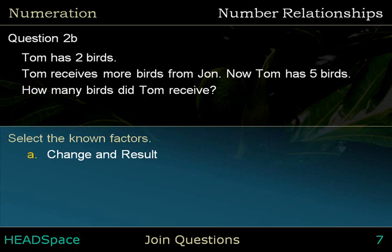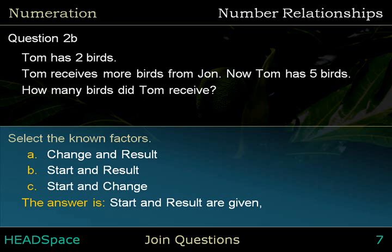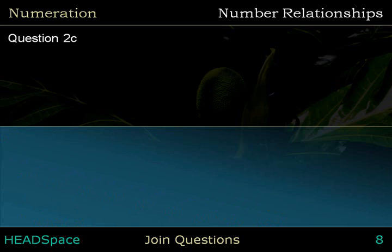Question 2b. Select the known factors. The options are: change and result, start and result, or start and change. The answer is start and result, where elements A and C are the known factors.